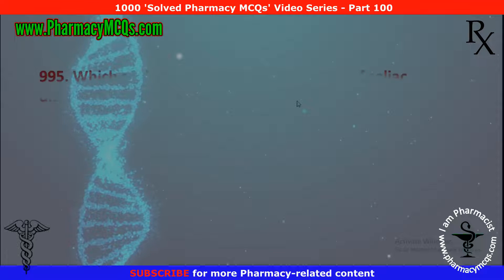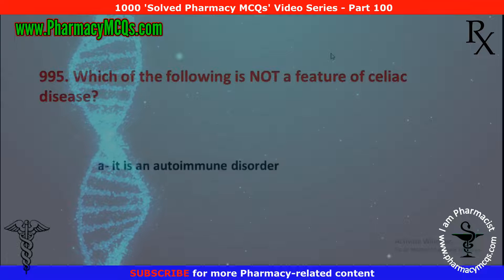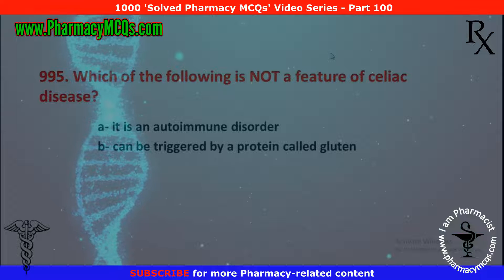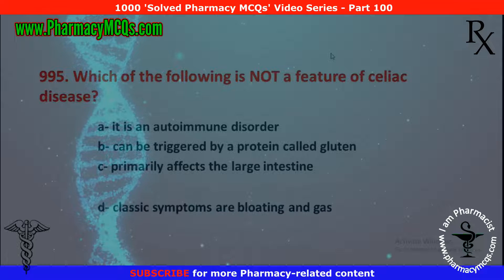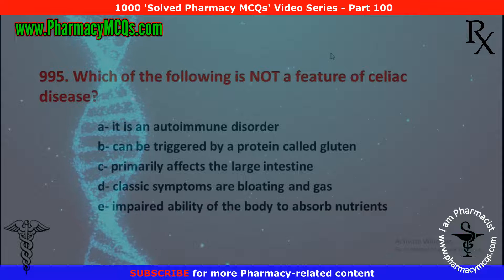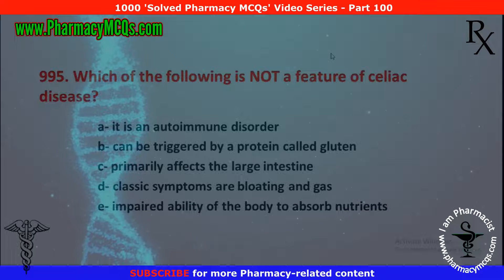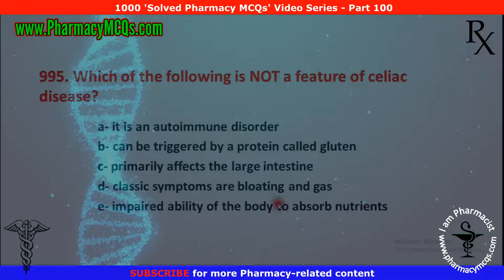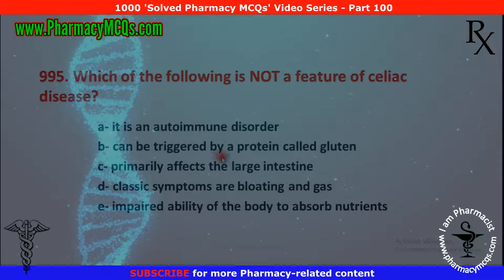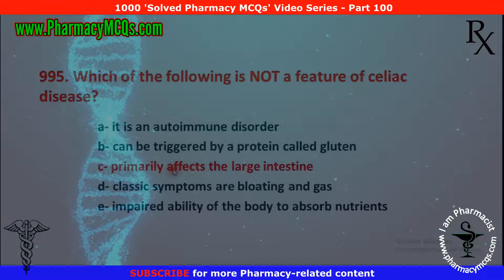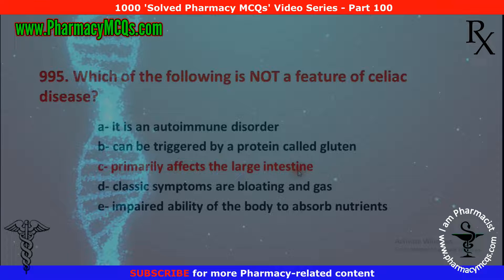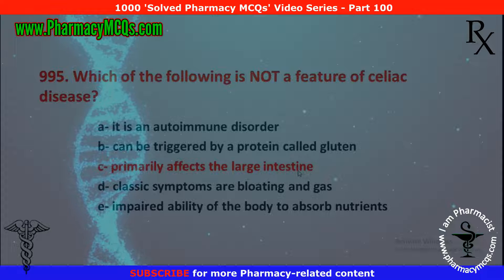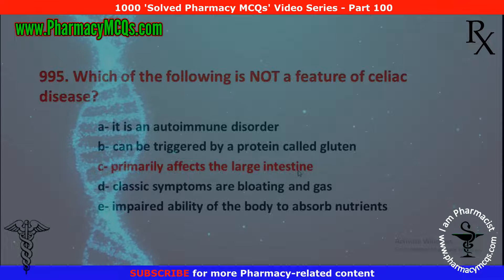Next MCQ: which of the following is not a feature of celiac disease? Options are: it is an autoimmune disorder; it can be triggered by a protein called gluten; it primarily affects the large intestine; classic symptoms are bloating and gas; and impaired ability of the body to absorb nutrients. The incorrect option is C — primarily affects the large intestine. This is not true about celiac disease because in celiac disease, the small intestine is primarily affected. So option C is correct.